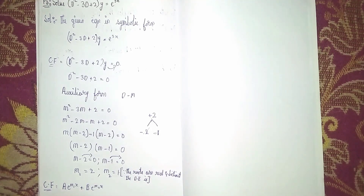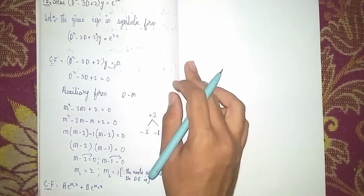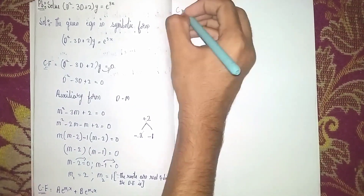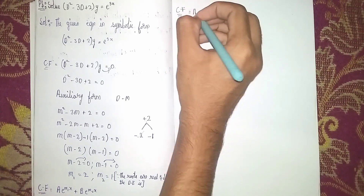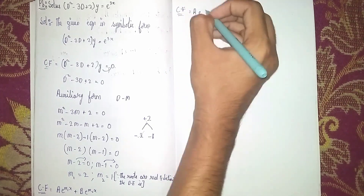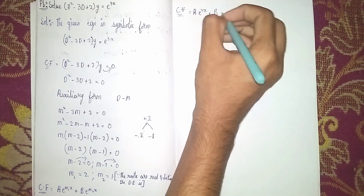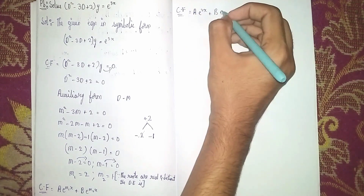Substituting m₁ = 2 and m₂ = 1, the complementary function becomes: CF = A·e^(2x) + B·e^(x). Now we have to find the particular integral.